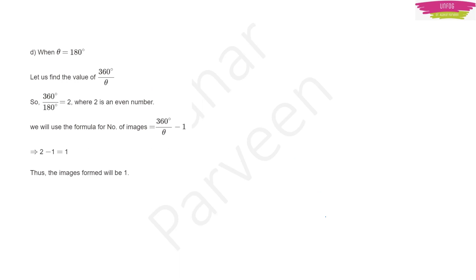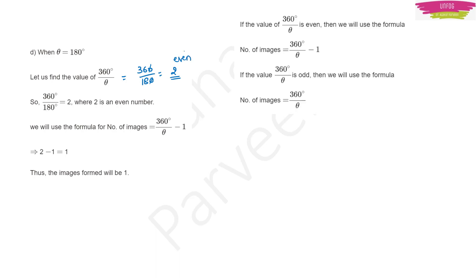Another example: if θ = 180°, substitute to get 360/180. The zeros cancel, giving 2, which is even. Since it is even, use number of images = 360/θ − 1 = 2 − 1 = 1. So the number of images formed is 1.